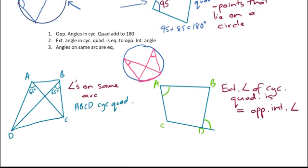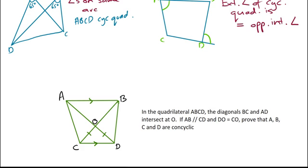So let's have a look at an example. In the quadrilateral ABCD, the diagonals BC, so this line here, BC and AD, which is this line here, intersect at O. If AB is parallel to CD, and DO, that is the length of DO, is equal to the length of CO, prove that A, B, C, D are cyclic.